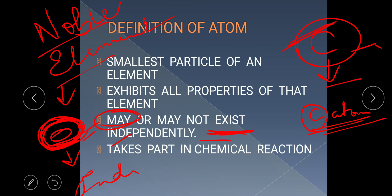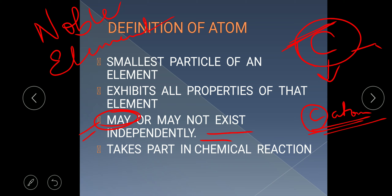Another key point for the definition is that the atom takes part in the chemical reaction. Combining all these key points, we define: atom is the smallest particle of an element which exhibits all the properties of that element.